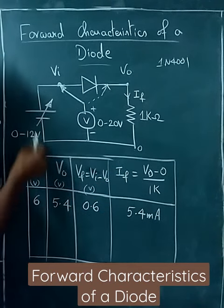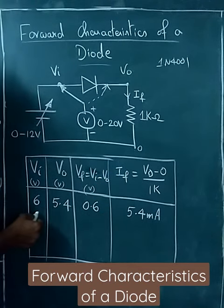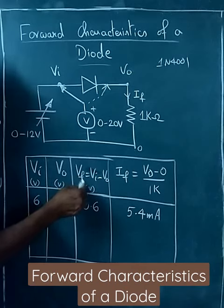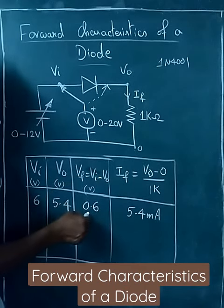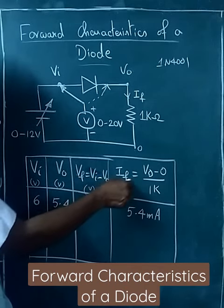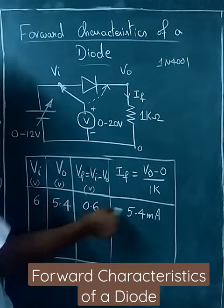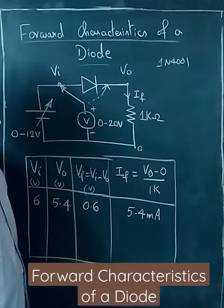For example, if V_in is 6 volts, V_out will be 5.4 volts. Therefore, Vf is equal to 0.6 volts and If is equal to V_out divided by 1k, which is 5.4 milliamps.